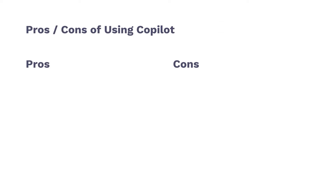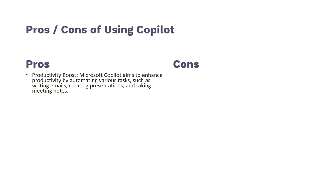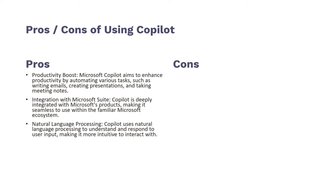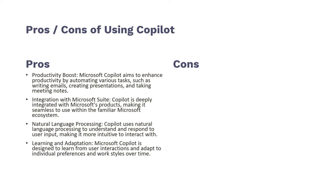Now a couple of the pros and cons of using Copilot. Starting with the pros: productivity boost — it enhances productivity by automating tasks such as writing emails, creating presentations, or taking meeting notes. We can also integrate it with Microsoft Suite, which is what we're doing today. It's a natural language process, meaning we're able to put in inputs naturally and get results. And the best part is learning and adaptation — it's designed to learn from user interactions, so the more questions we ask over time, it starts to understand how we think about our data.